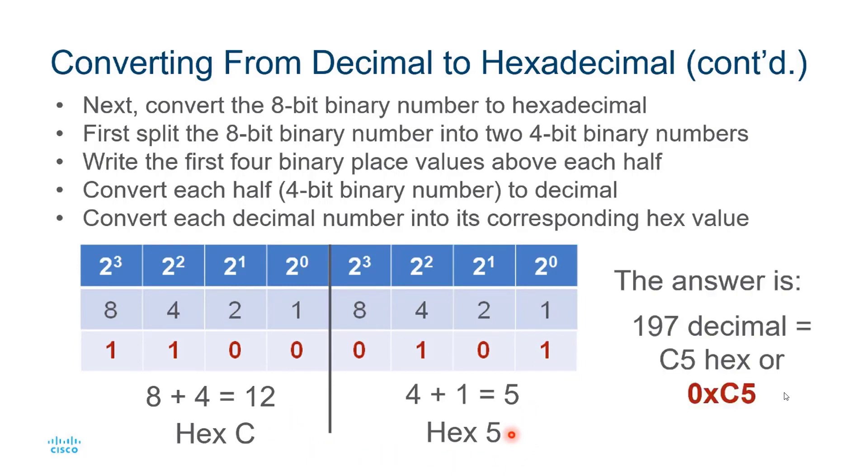Therefore, 197 in decimal is C5 in hex, or it can also be written with a 0x preceding it to indicate that what follows is written in hexadecimal.